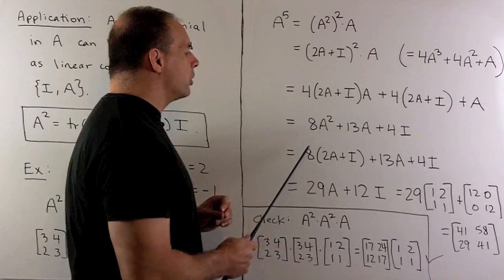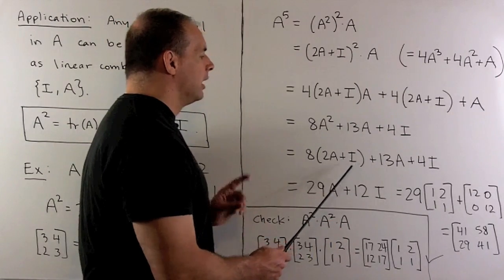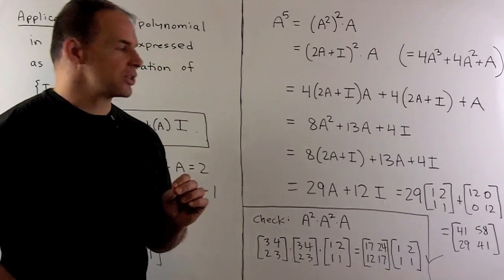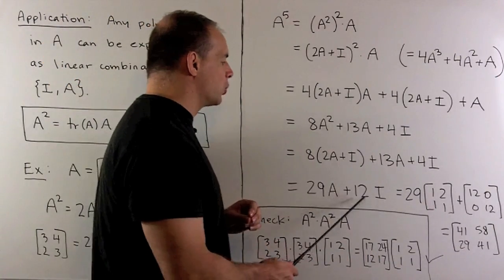That gives me another polynomial. Here, we take this A squared, we write it as 2A plus I. And then we note, we've gotten everything down to a linear combination of A and the identity matrix. So, we have 29A plus 12I.